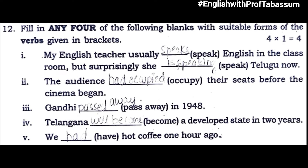Bit number twelve: fill in any four of the following blanks with suitable forms of verbs given in brackets — this means tenses you need to fill. 'My English teacher usually speaks English in the classroom, but surprisingly she is speaking Telugu now.' 'The audience had occupied their seats before the cinema began.' 'Gandhi passed away in 1948.' 'Telangana will become a developed state in two years.' 'We had hot coffee one hour ago.'